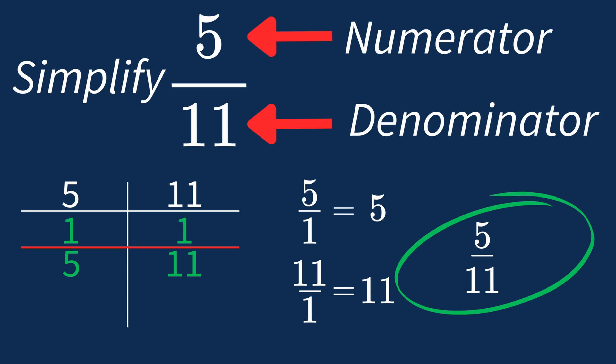In future, if you come across a fraction where its largest common factor is 1, you know that fraction is already in its simplest form.